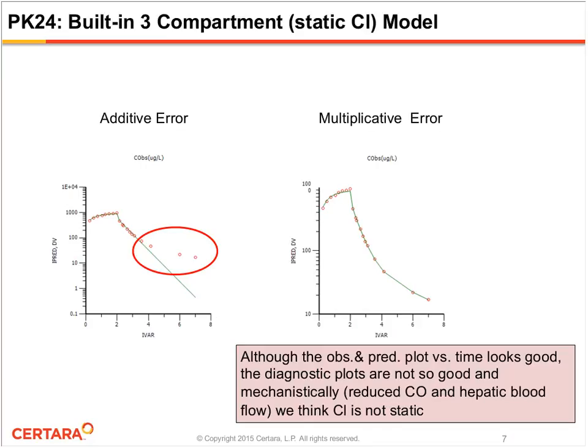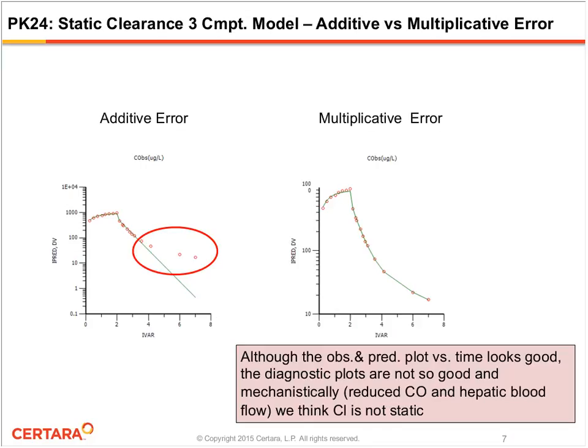So here's what the actual output looks like for the additive and multiplicative error models. And as you can see, the additive error model has a serious deficit. It doesn't fit the terminal phase really at all. And when you switch then to a multiplicative error model, you see then that the terminal phase is actually fit very well. And in addition, it hasn't compromised the fit to the higher concentrations, which is important and something you should always consider when you're doing weighting. Now, you might ask, well, why don't you just stop with this particular static error model? It actually gives a good fit to the data. However, if you look at the diagnostic plots, they don't look so good. And mechanistically, we do know that cardiac output is reduced and hepatic blood flow were reduced by this drug. So we have a mechanistic reason to believe that the clearance is not static.